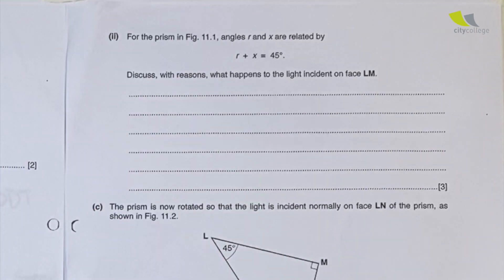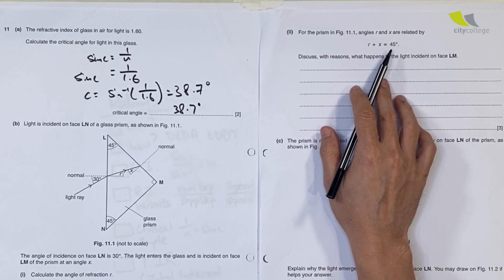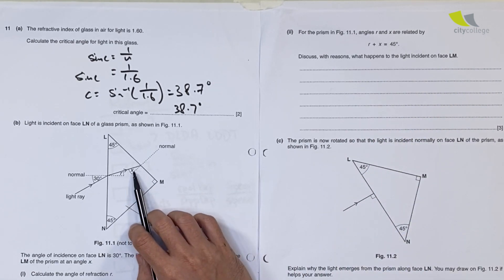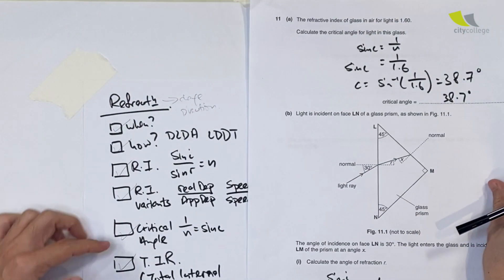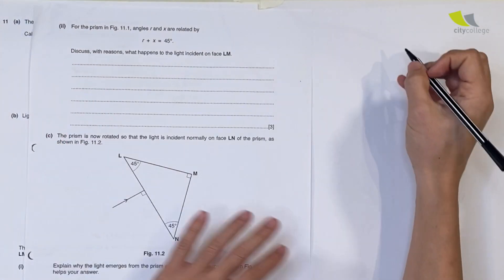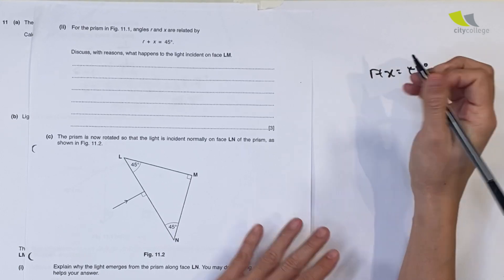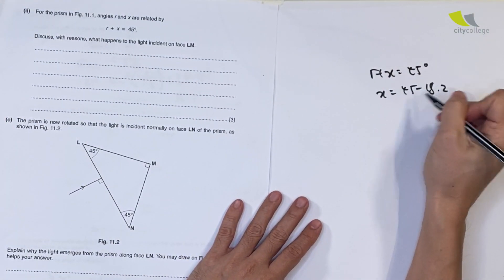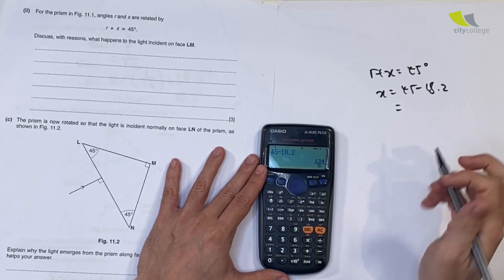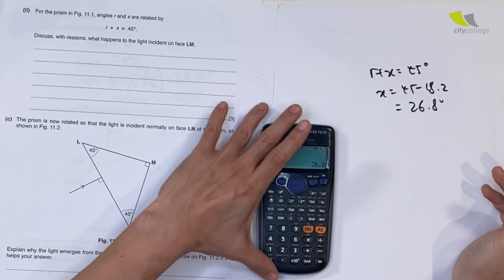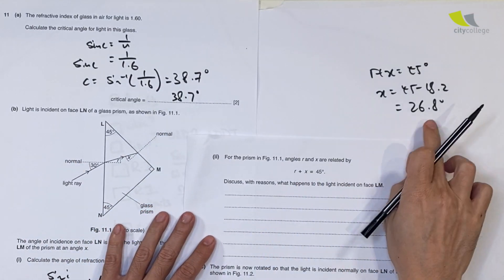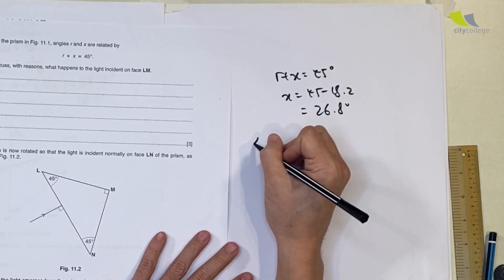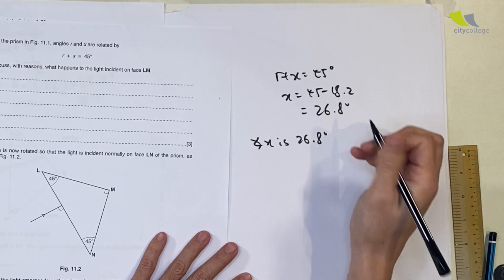For the prism in figure 11.1, angles r and x are related by r plus x equals 45. Discuss with reasons what will happen to the light incident on phase LM. They're testing if you understand the concept of critical angle and total internal reflection. Since r plus x equals 45 degrees and r is 18.2, x equals 45 minus 18.2, which is 26.8 degrees. We need to check if x is larger than the critical angle.